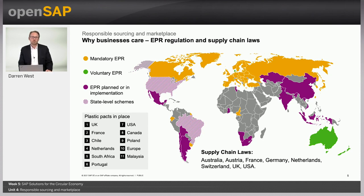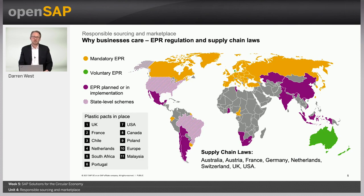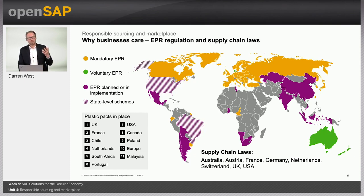Firms that are not sustainable pay more for their finance, suffer with their brand image, their sales will suffer, and they can't recruit and retain the best employees. Also, increasingly there is regulation in this area. We heard in the last unit about EPR, and today there are 38 schemes live globally, expanding rapidly in number and complexity, including complex fee structures like fee modulation. There are also supply chain laws in countries like the USA, UK, Australia, Germany, and the wider EU, written to tackle human rights and environmental issues in supply chains, with big fines for non-compliance.